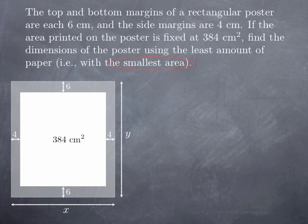We're looking for the smallest possible area, so in other words we're trying to minimize the product X times Y, which is the area of the whole poster. So what is the constraint here? The constraint is that the printed area is 384 square centimeters and we have fixed margins.